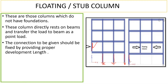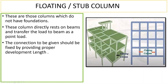In the same way, observe here: we have one column with a foundation — a fixed support — and practically on the ground we put a foundation to that column. But here we have put a column with no foundation, so it is floating in air, hence it is called a floating column. This column directly rests on the beam and transfers the load to the beam as a point load, so this beam must be designed for that column load.